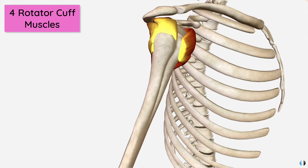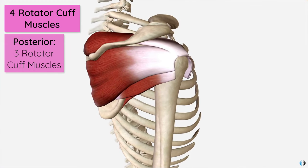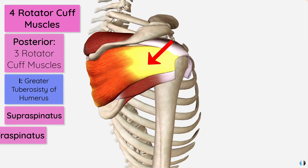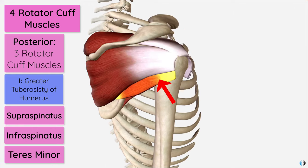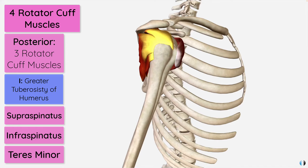If we break down their function individually, we have three muscles on the posterior surface of the scapula which insert into the greater tuberosity of the humerus: the supraspinatus, the infraspinatus, and teres minor muscles. All three of these are considered to be lateral rotators of the glenohumeral joint, with the supraspinatus also having a suggested role in abduction.